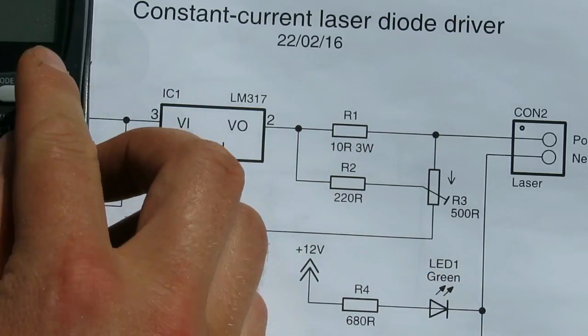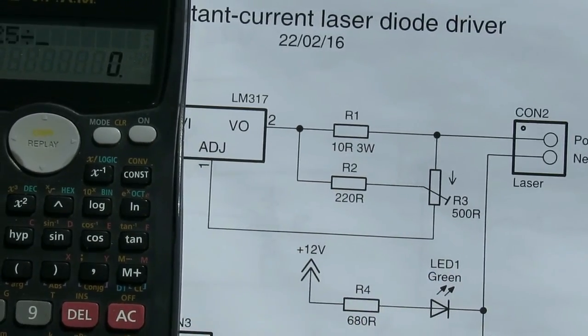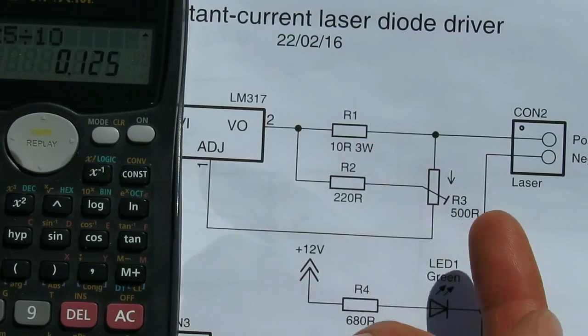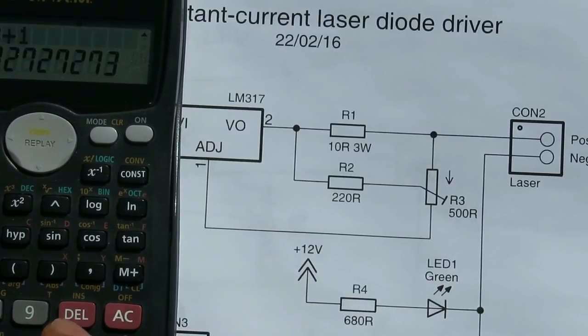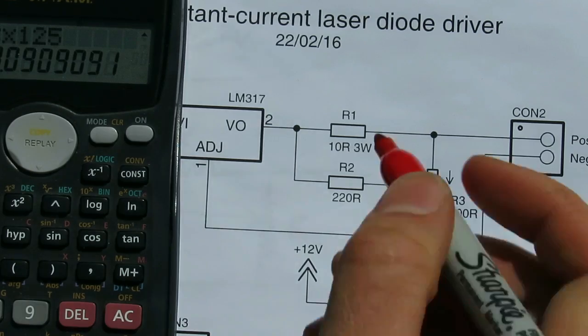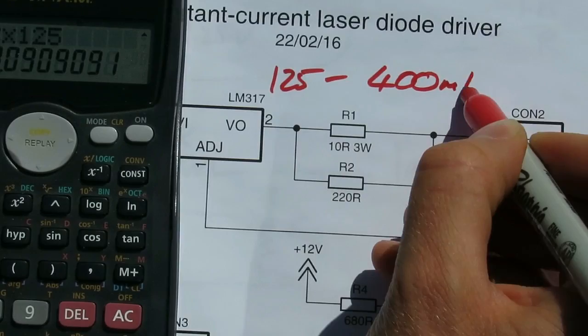This will let us vary the current anywhere from 1.25 divided by 10, which is 125 milliamps, up to 500 divided by 220 plus 1 times 125, which is 400 milliamps. So anywhere from 125 to about 400 milliamps.